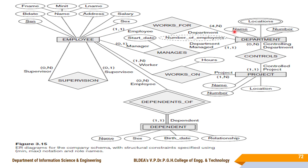In Employee, an underlined attribute indicates a key attribute, making it a strong entity type. In Department, Name is the key attribute. In Project, Name and Number are key attributes. All these entity types have key attributes. But Dependent has no key attribute — it is a weak entity type represented with double rectangle, and its identifying relationship uses double diamonds.